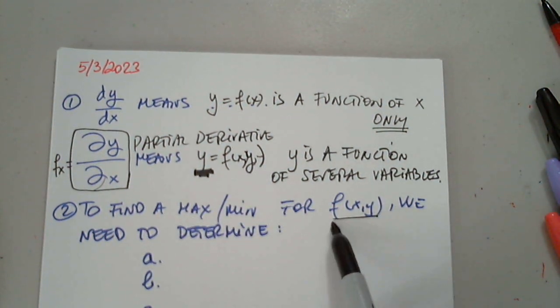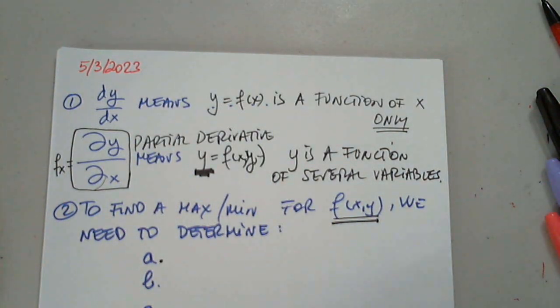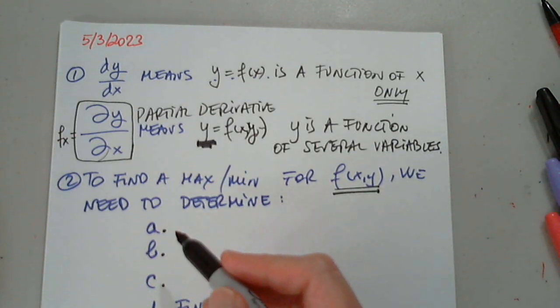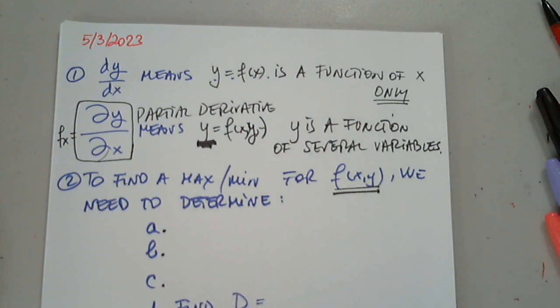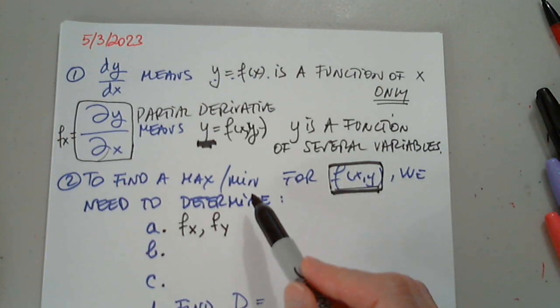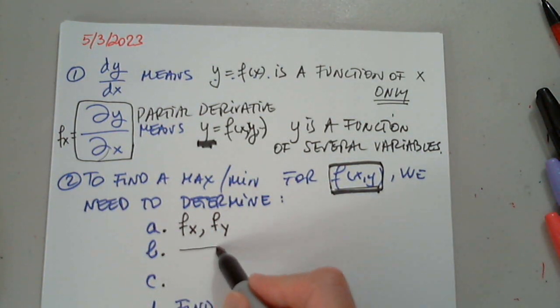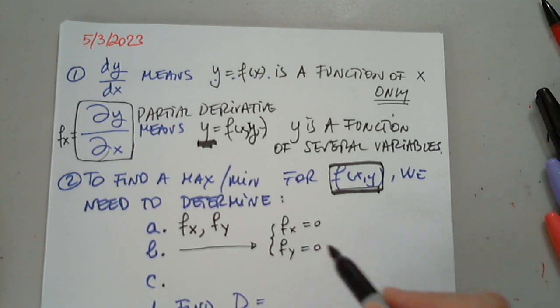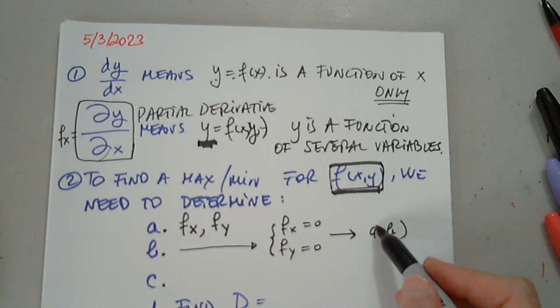To find the maximum for a function with two variables, we need to determine what first. Let's list them again. What do we find first? If D is greater than zero. So first of all, we have to find fx and fy, because we are talking about two variables, right? So this is from last time. So first we find fx and fy. What do we do with fx and fy? We find the f of x and y. We set them equal to zero. And from this system, assuming we are getting an ordered pair or more.